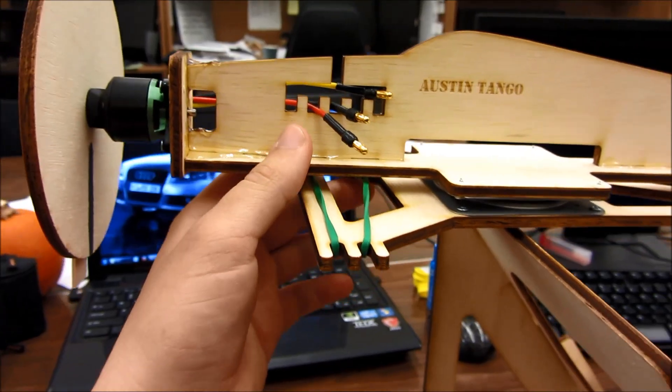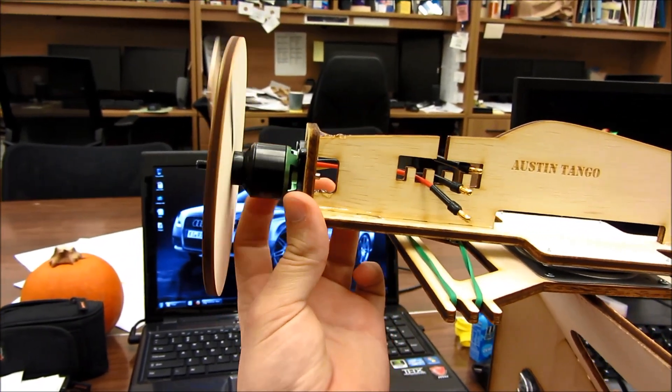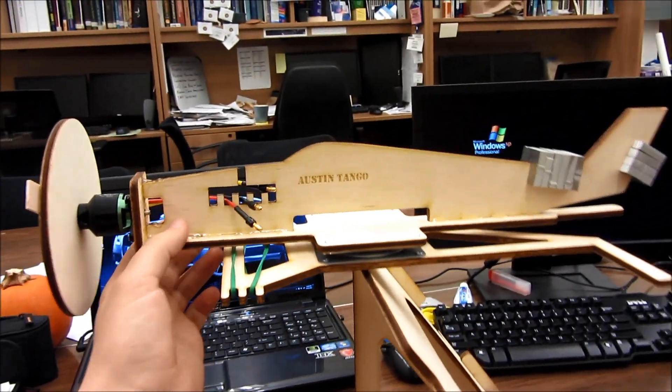which will basically pull on this with a certain force until we reach that line, and we'll be able to measure it. It kind of looks like the weights on the floor in the next video, but it's actually not. So the device is pretty self-explanatory.